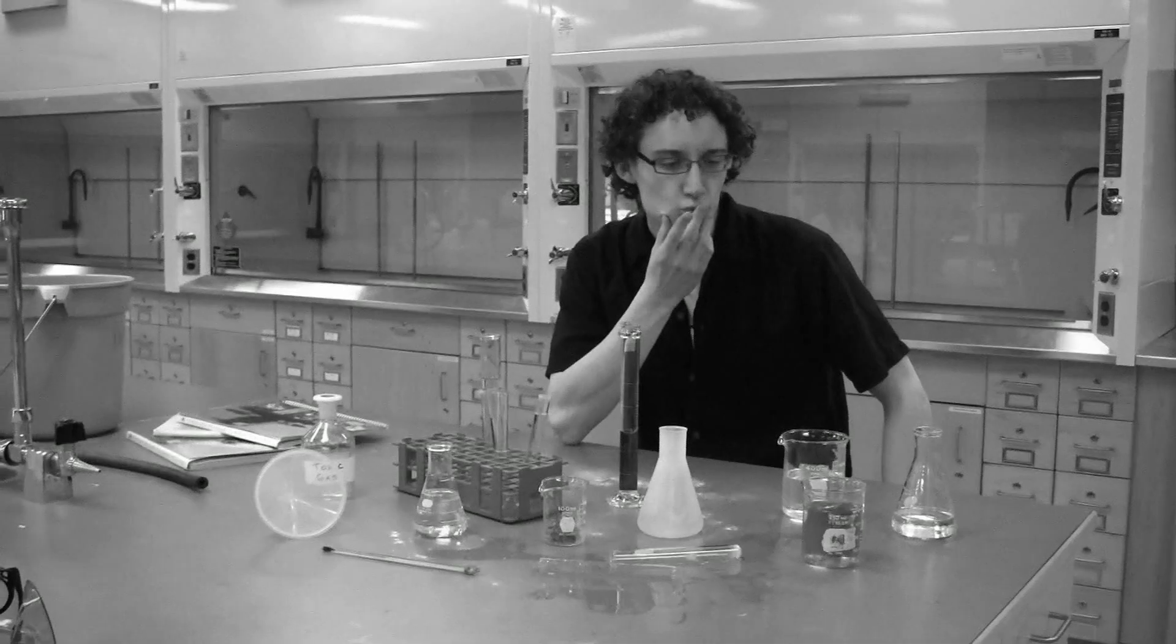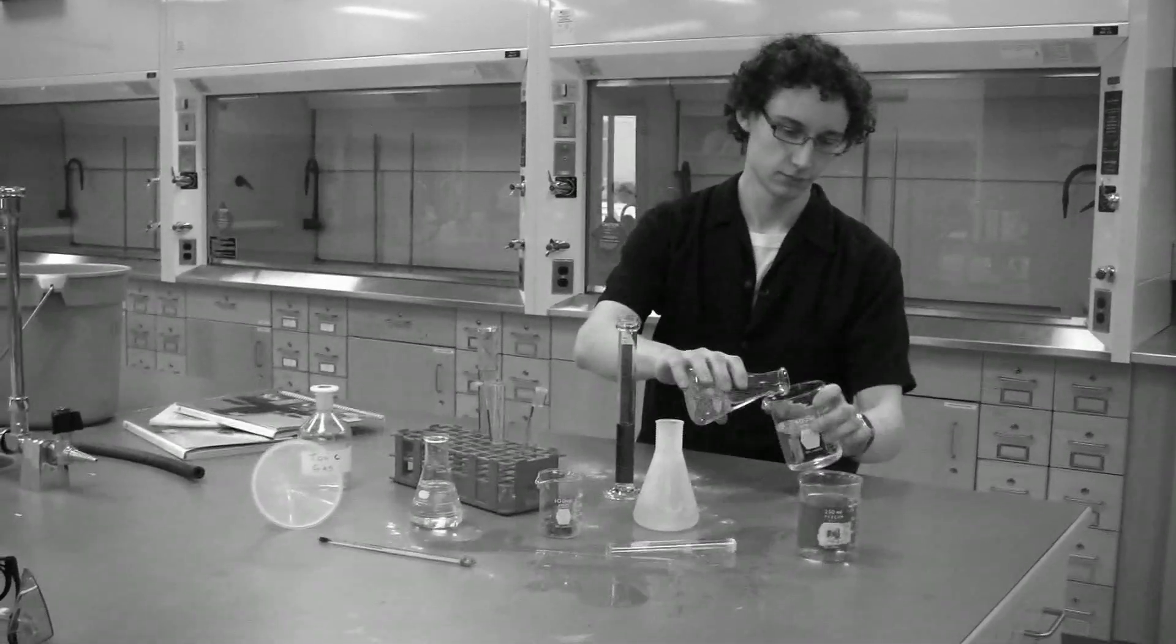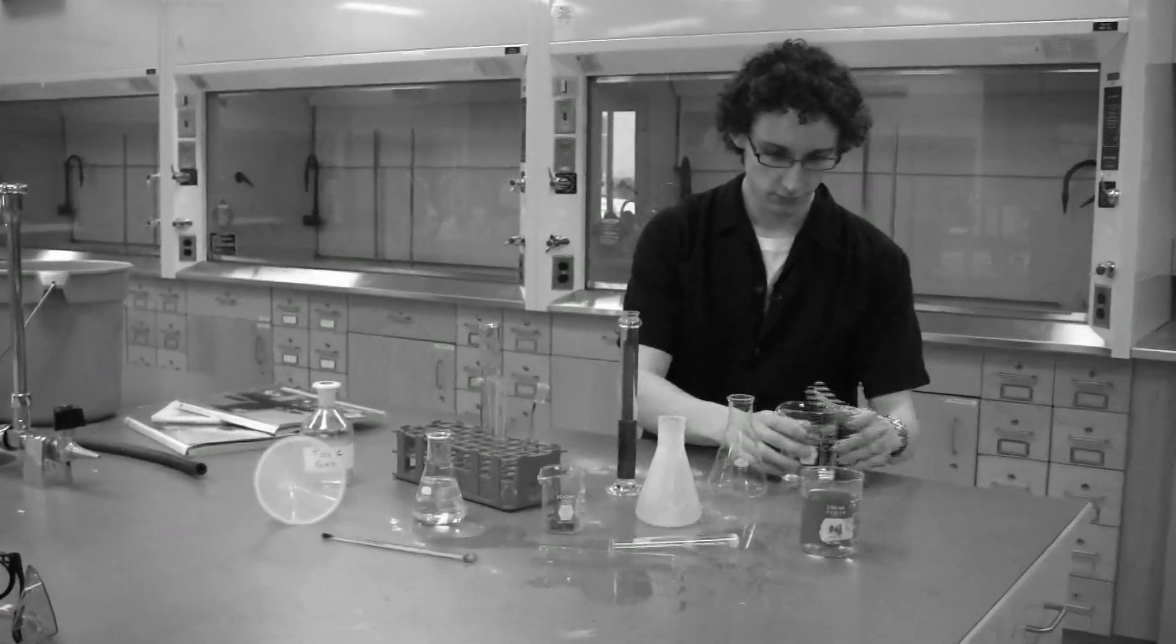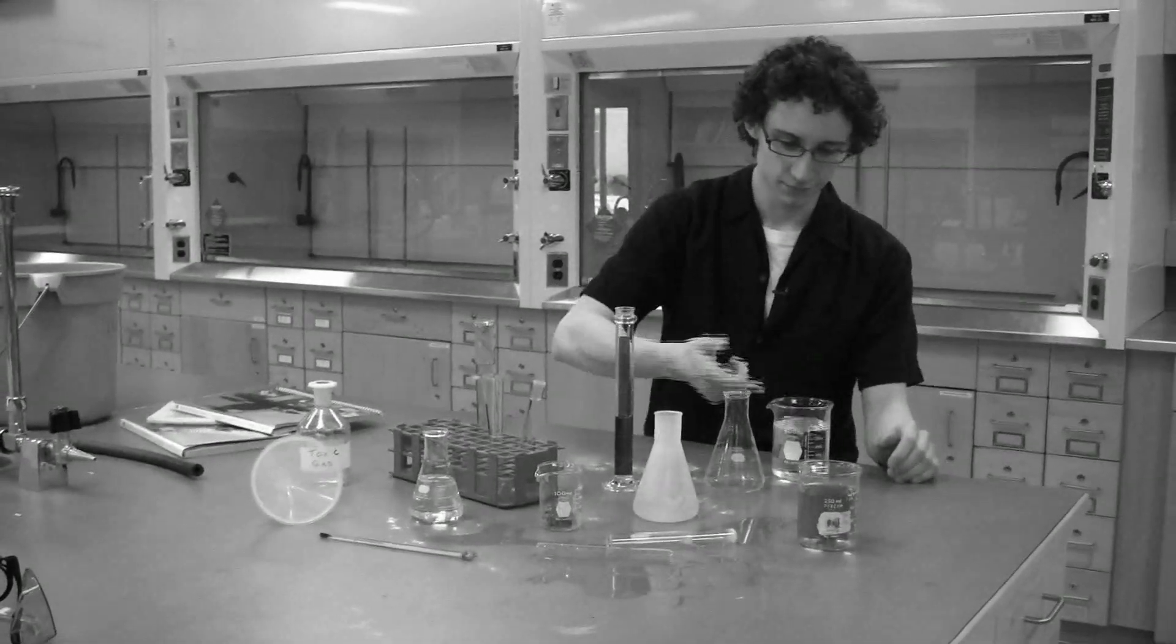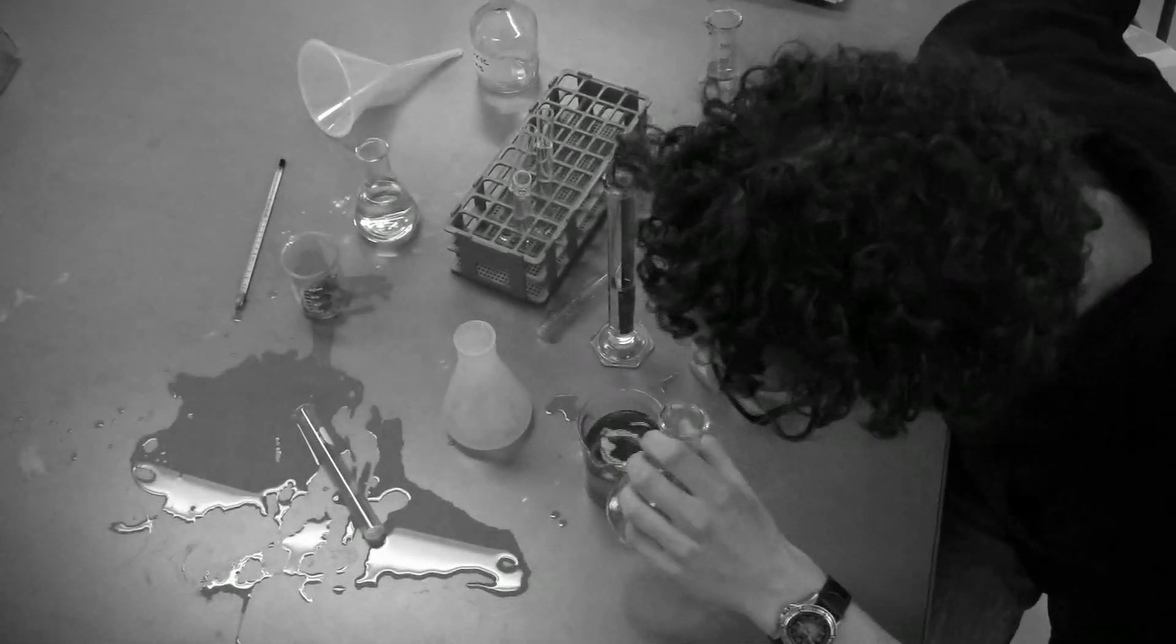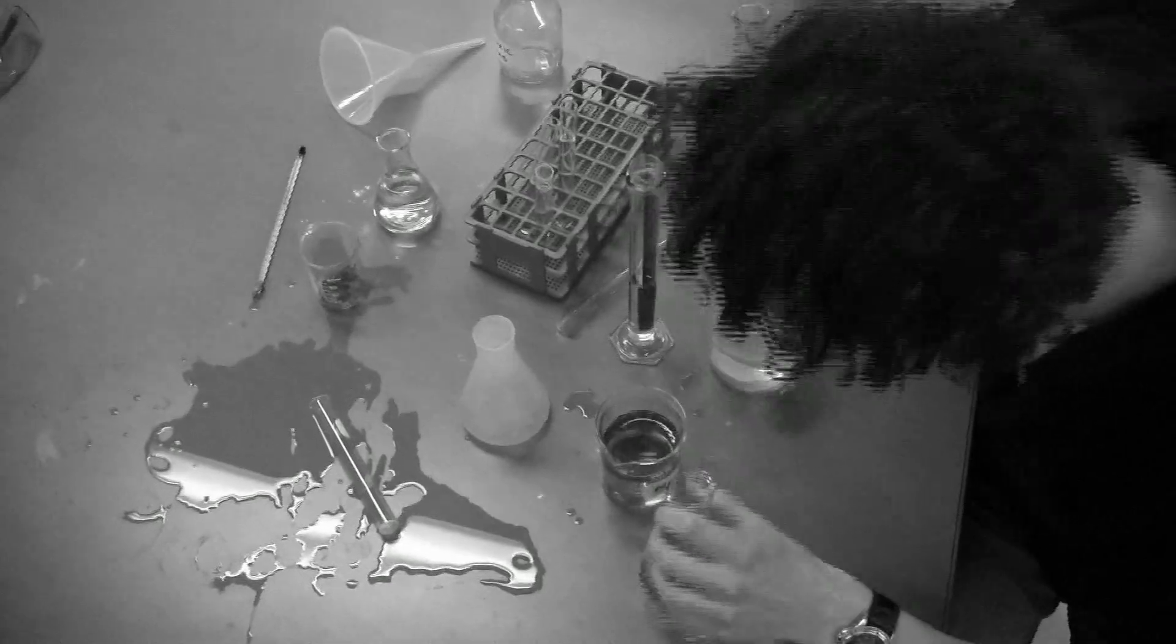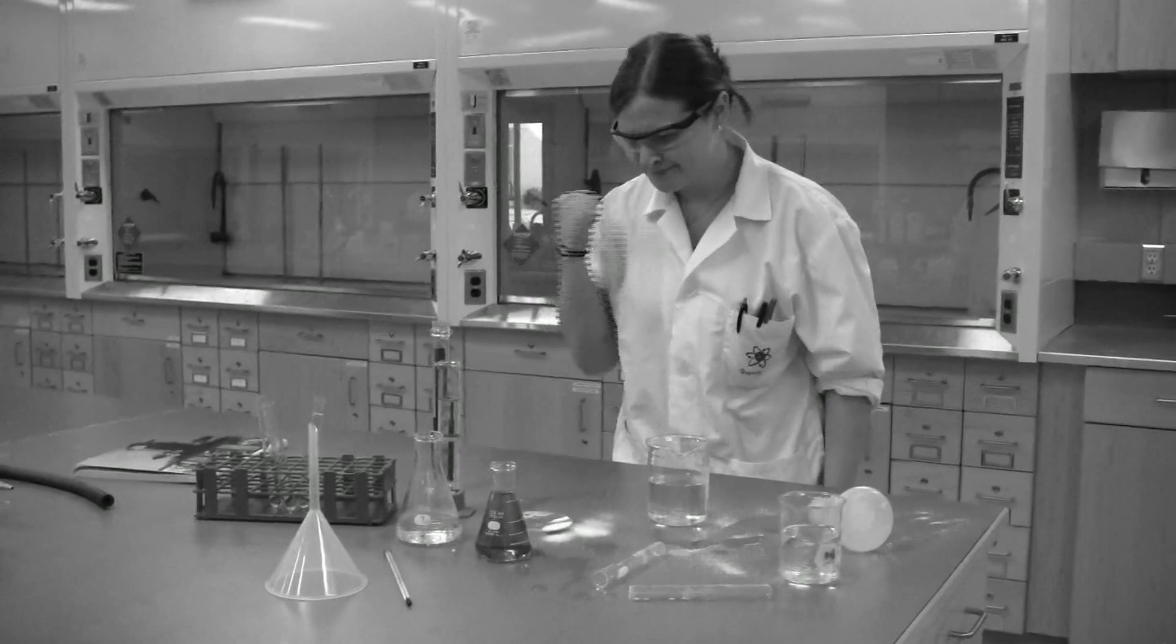Despite our best efforts, sometimes mistakes still occur in the lab. While it is important that we try to limit these mistakes, we must know how to deal with the emergencies that may occur. Take Johnny here. The best way Johnny can prevent accidents is to keep his workspace clean. Look at all the potential hazards here. Not only is this dangerous, but the next person to use Johnny's workspace is going to be very mad at him.